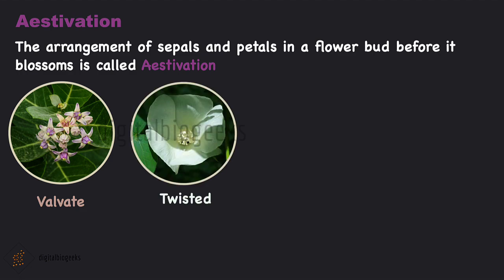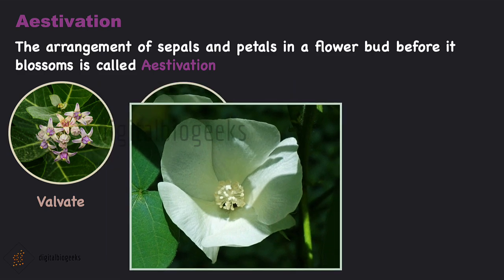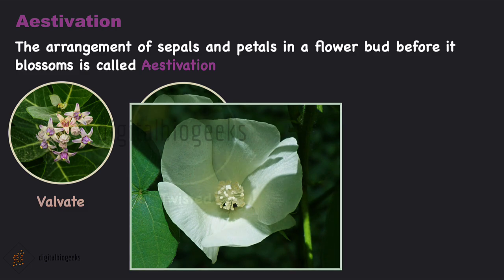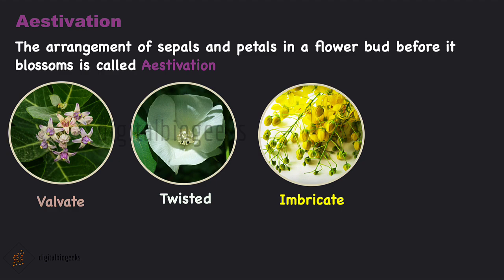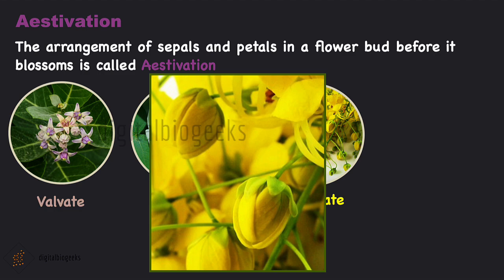Next is twisted aestivation — for example, cotton and china rose: when the edge of the sepals and petals overlap with each other. Next is imbricate aestivation — for example, cassia and gulmohar: when the petals and sepals are irregularly overlapped without a particular direction.